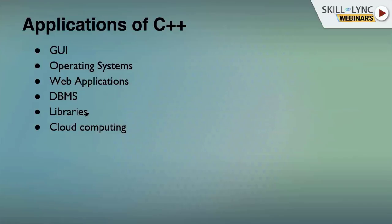For cloud computing and distributed applications, C++ is mainly used because it supports load tolerance and scalability for multiple connected machines. Even though it gives the functionality of a higher-level language, it can still interact with hardware — making it a middle-level language rather than purely low-level. These are the wide-ranging applications of C++. Let's look at the trends in the industry.